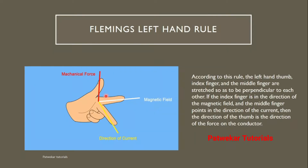Next is Fleming's Left Hand Rule. According to this rule, the left hand thumb, index finger, and middle finger are stretched so as to be perpendicular to each other. The middle finger indicates the direction of current, the index finger indicates the magnetic field, and the thumb shows the force on the conductor.